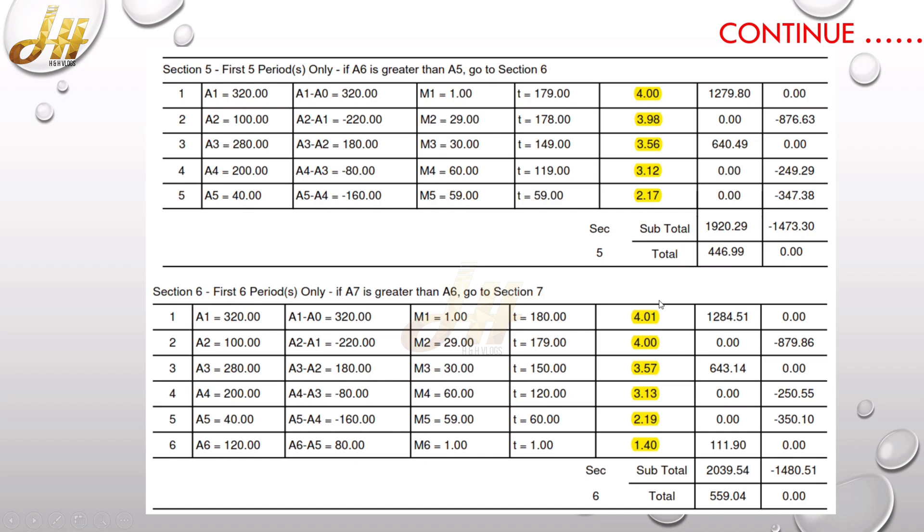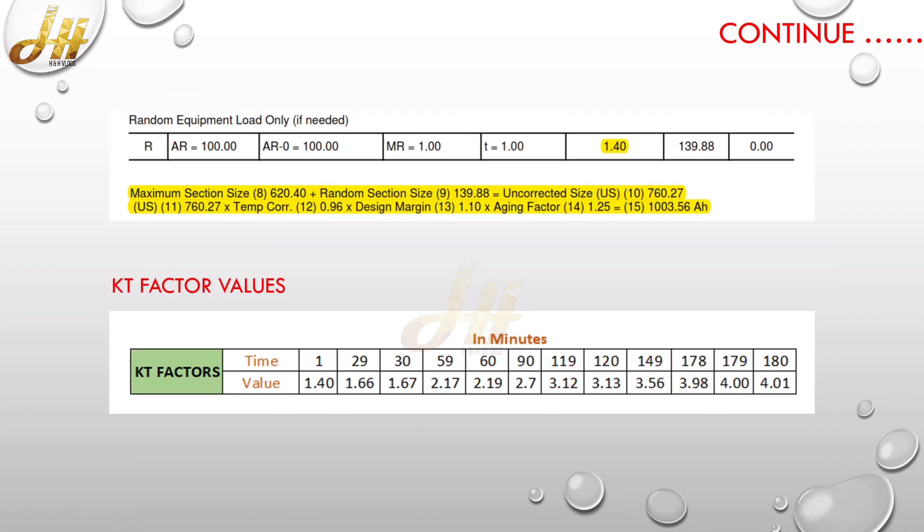And for the sixth period, the maximum capacity is 559.04. The KT factor value for 180 minute is 4.01. So as I said earlier, the random load is being calculated separately.